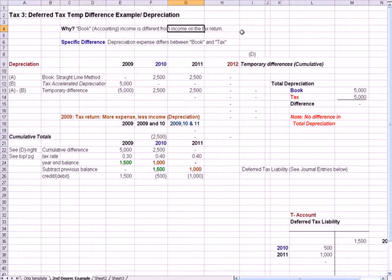Different income levels means different taxes due. If the book income differs from the tax income, we're going to have a difference. In this case, it is a temporary difference.